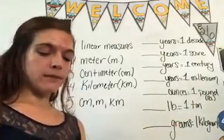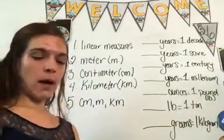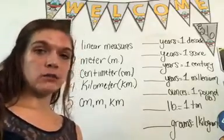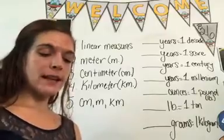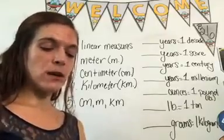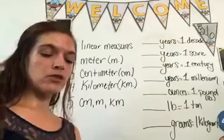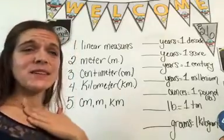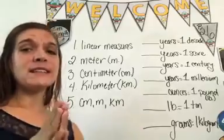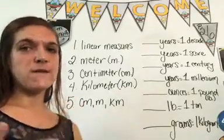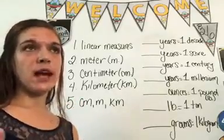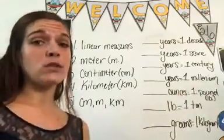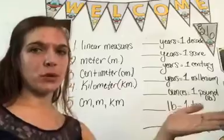Look at number one. Linear measures are used to measure length — longitude. Although the United States uses primarily English measures, most developed countries use the metric system. Isn't that crazy that the United States always has to be different? The United States uses inches, feet — pulgadas, pies — but you guys use metros. Most countries use metros, meters.